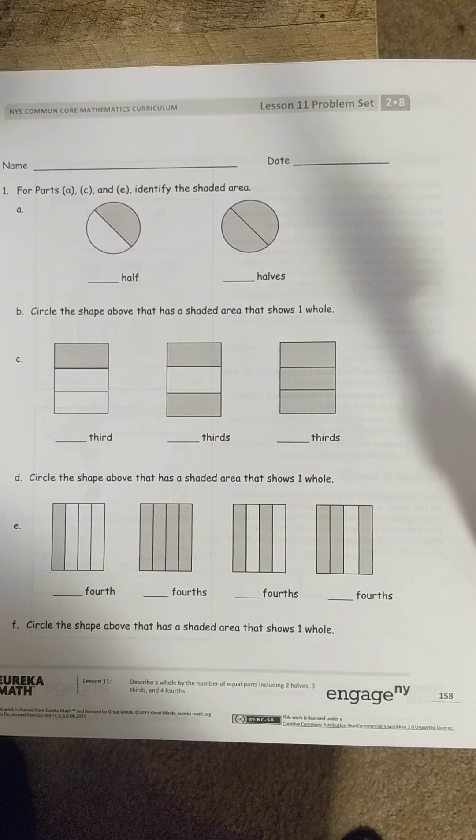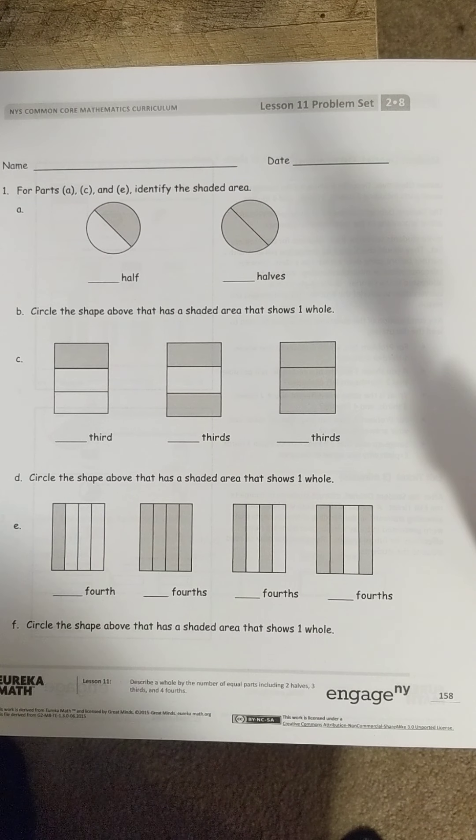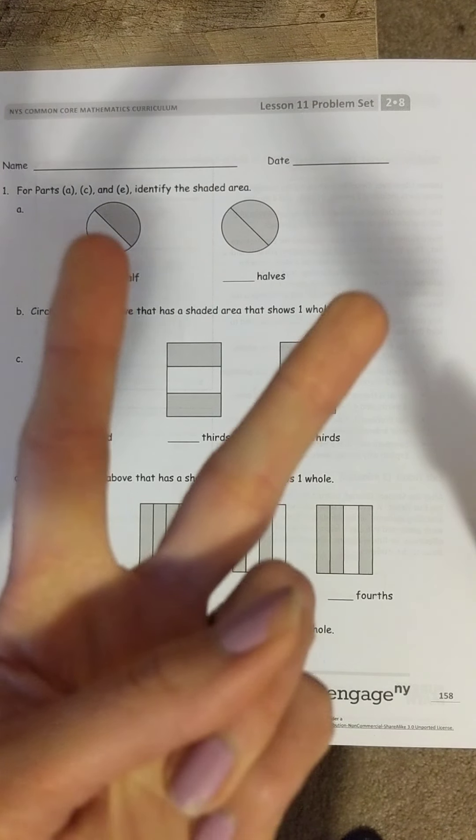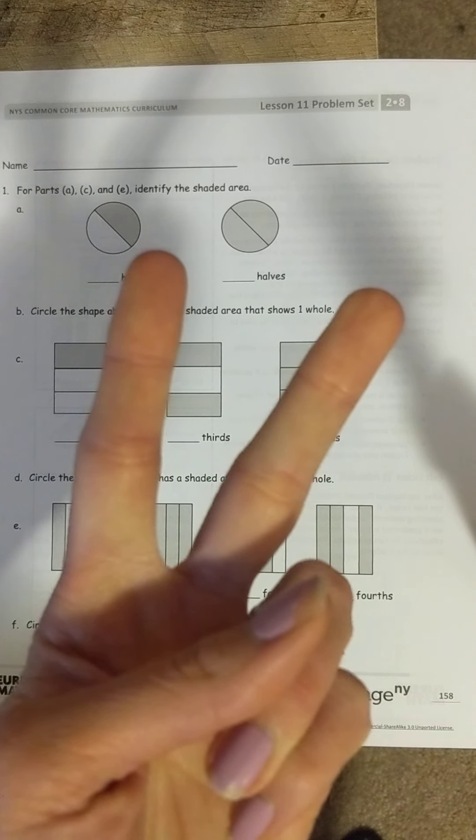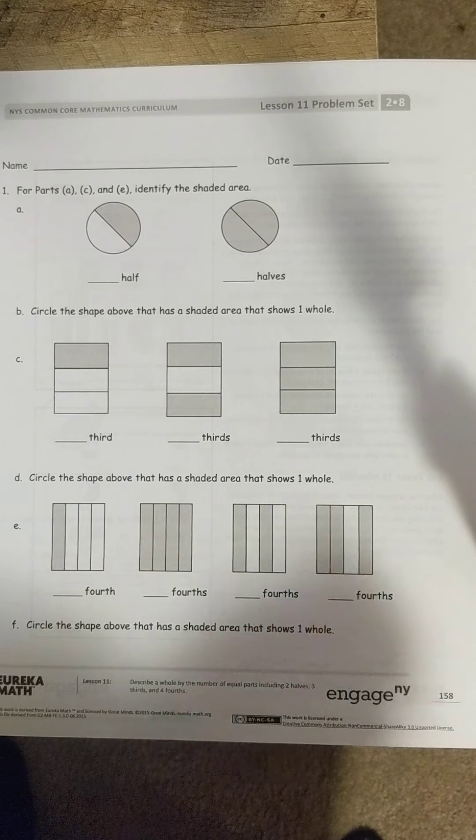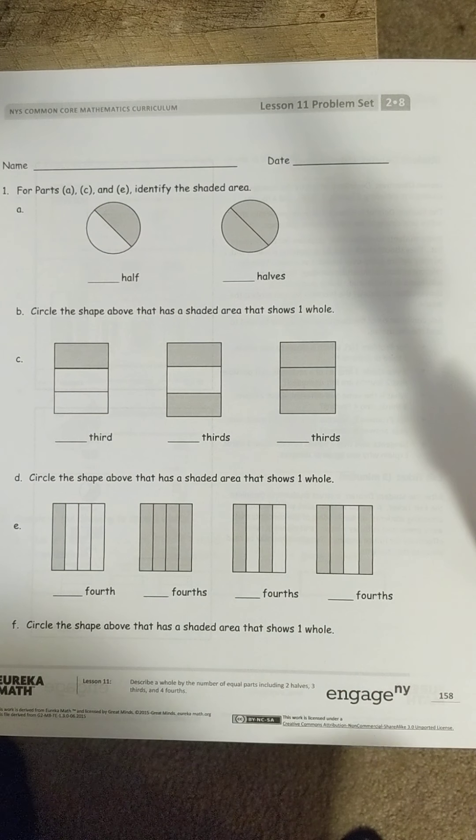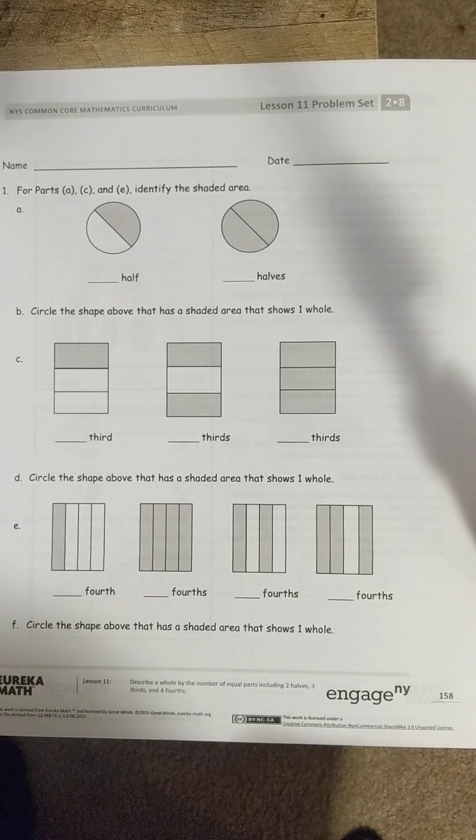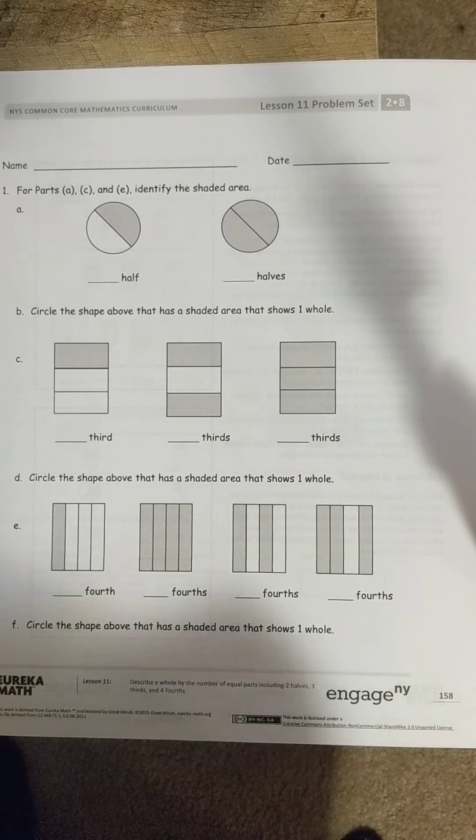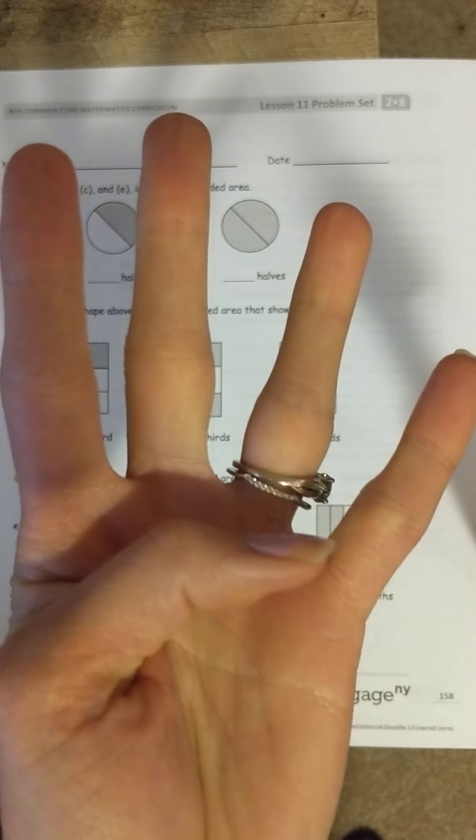When we're looking at halves, we know from a couple of days now that something that shows halves shows two equal parts or shares, something that shows thirds shows three equal parts or shares, and a shape that shows fourths shows four equal parts or shares.